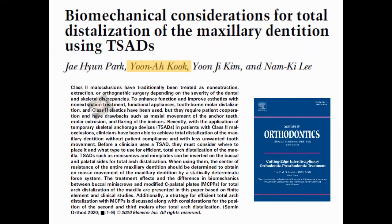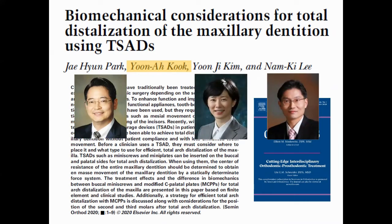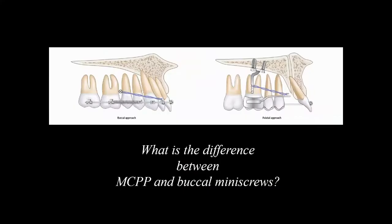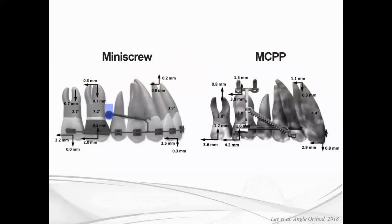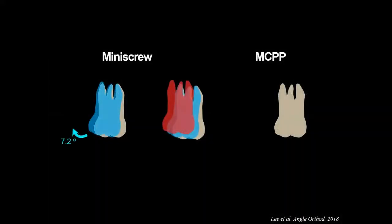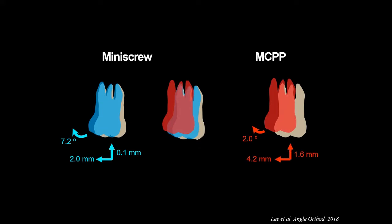Dr. Park of Arizona, Dr. Lee of Bundang Seoul National Hospital, Dr. Kim and I have published an article about MCPP. This is the recent version in Seminars in Orthodontics. What is the difference between MCPP and buccal mini-screw? Compared to buccal mini-screw, which has only one point around 8mm, MCPP allows you to choose from 4mm to 12mm distance at the wire level. MCPP was twice as effective for distalization and produced much less tipping compared to the buccal approach.